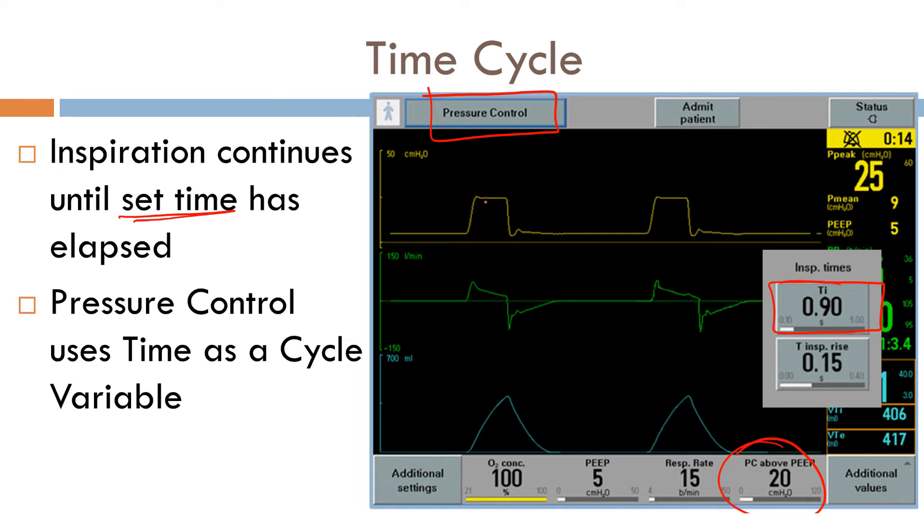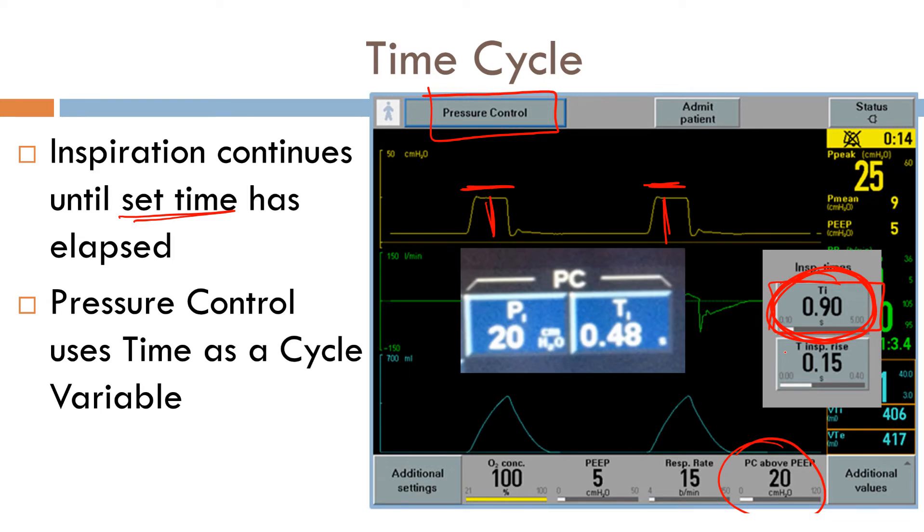So here we can see the amplitude is exactly set. This is our target variable pressure. It's exactly the same. However, the duration of each breath is exactly the same. Why? Because each breath is exactly 0.9 seconds. In the Puritan Bennett, here's your target variable. And this has set the duration or the inspiratory time to 0.48 seconds.